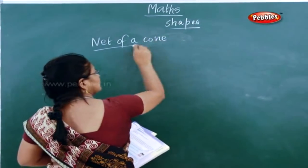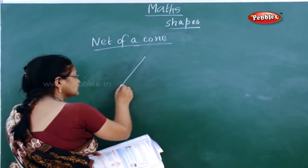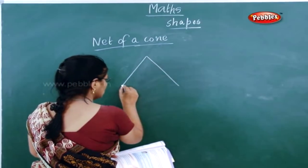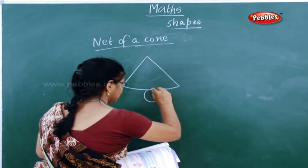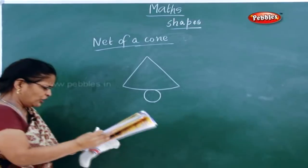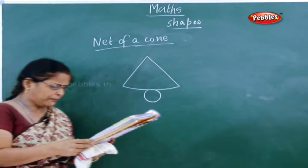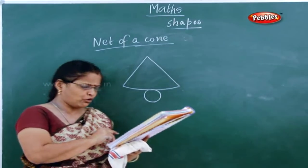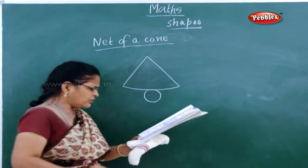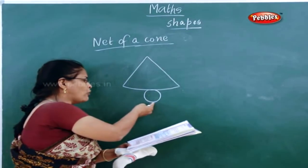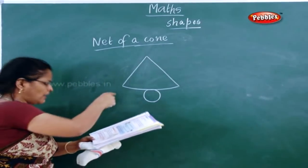Net of a cone. What is the net of a cone? See the figure. Join both the sides of the portion of the circle in such a way that the arc of the circle falls on the boundary of the circle attached at the bottom.